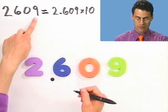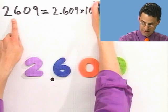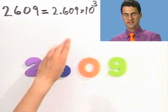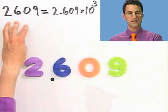2,609 would actually equal 2.609 times 10. And what's the power? Well, I moved one, two, three places, so cubed. This is the scientific notation for this number.